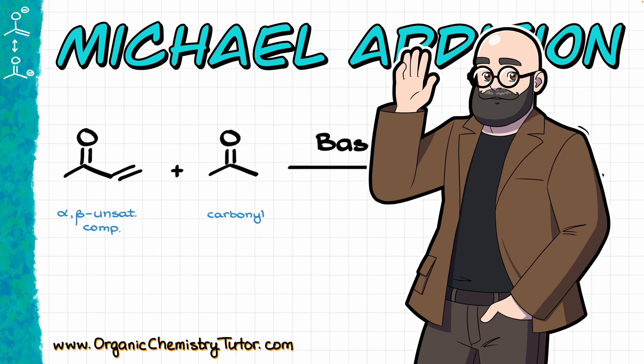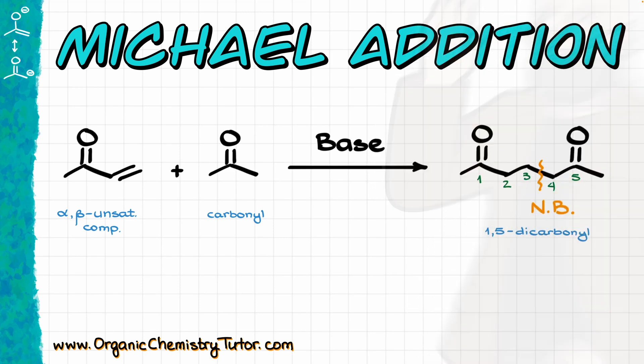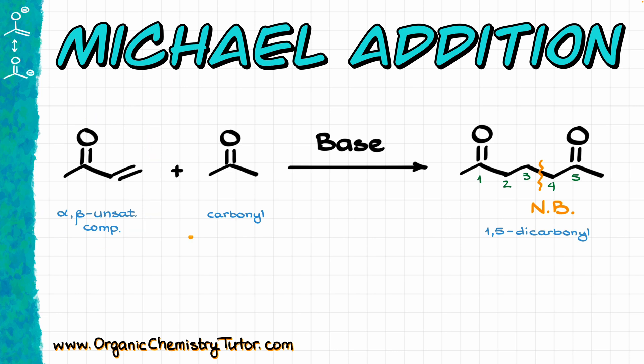Hello everyone, Victor is here, your organic chemistry tutor, and in this video I want to talk about the Michael addition, which is a reaction between the alpha-beta unsaturated compound and an enolate that we are going to get from some sort of a carbonyl.